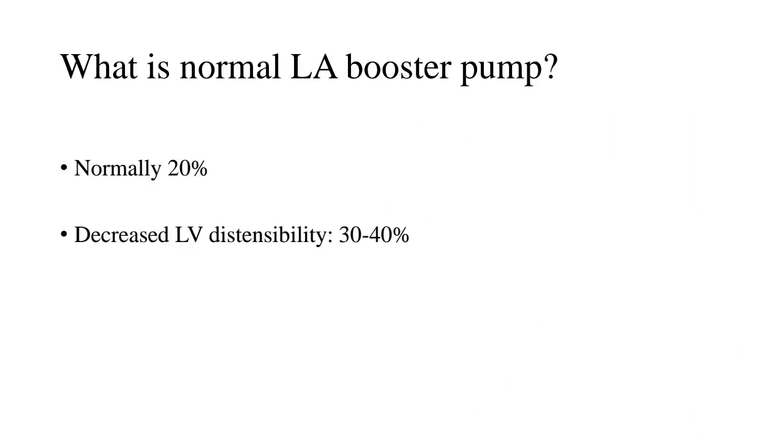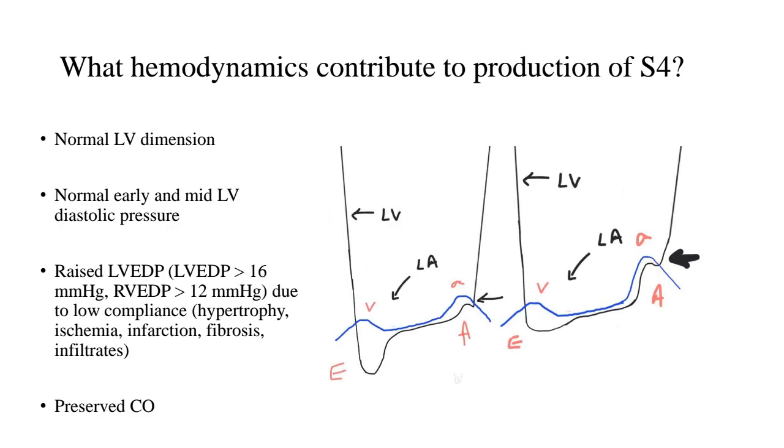What is the normal LA booster pump? Now, normally the left atrial booster pump or the left atrial contraction contributes to 20% of the cardiac output. However, when you have instances where the distensibility of the left ventricle is decreased, which in other words means that the compliance of LV is decreased, then the left atrium increases its work output to as much as 30 to 40%.